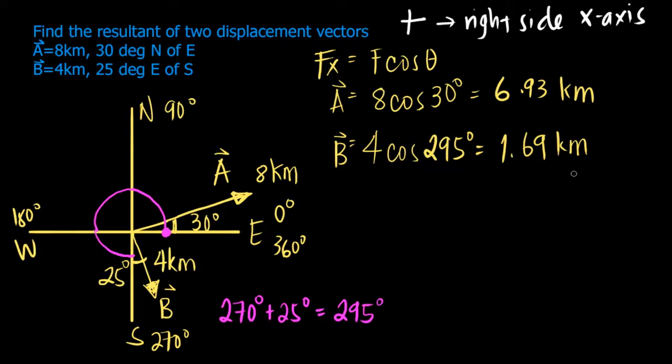Let's add these up. So 6.93 plus 1.69 is equal to 8.62 kilometers. And this is the resultant of all the x components, the total or resultant.